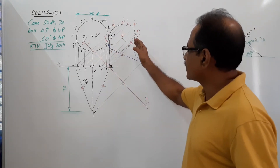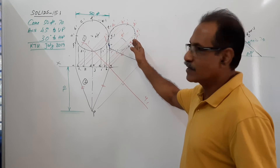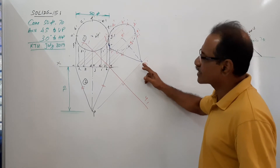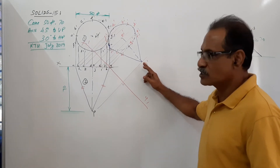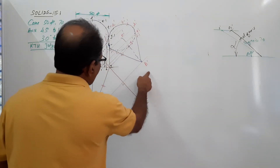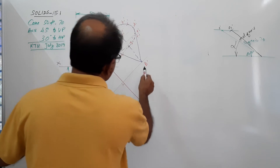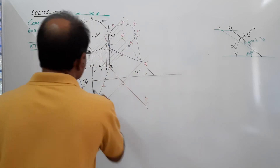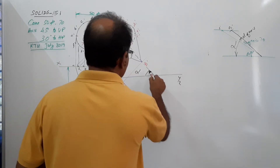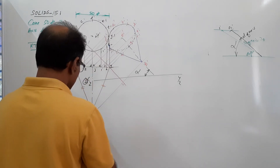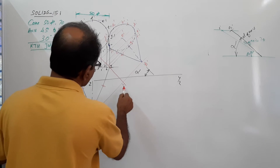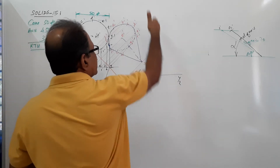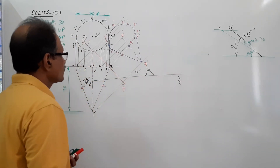This is elevation, this is plan, this is elevation. You have to draw a new plan and the apex has to be nearer to HP. So where is x2y2? x2y2 has to be drawn nearer to this. There are two options: one is to extend and draw x2y2 somewhere here with the calculated value of alpha, or extend in the other direction and draw x2y2 there.